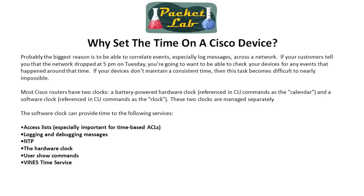Another reason is that there are functions within IOS that use time — time-based access lists, logging, and all that stuff. You're going to want accurate timing. If you have a time-based access list set to allow backup traffic after 8 p.m., but your device's time is off and it's actually noon while the router shows 8 p.m., it starts allowing backup traffic to flow and makes everybody's lunch hour pretty crappy. So it's important for these features to have accurate synchronized time across your network.